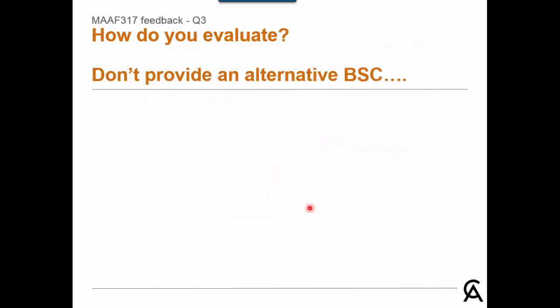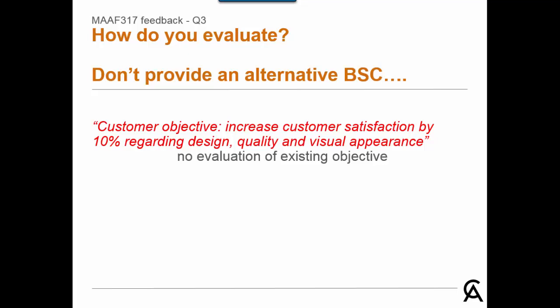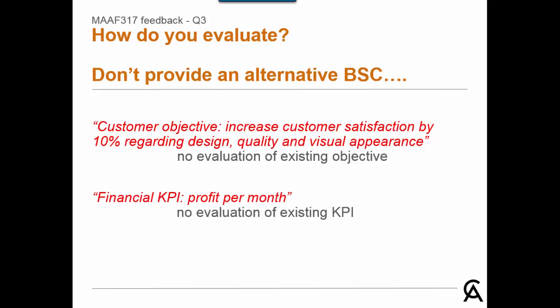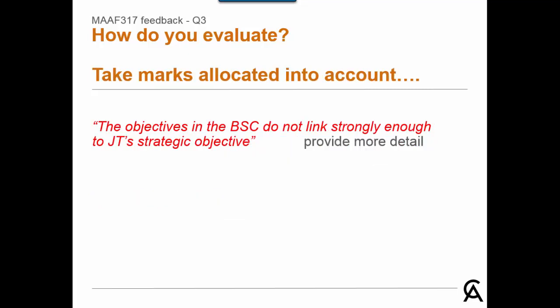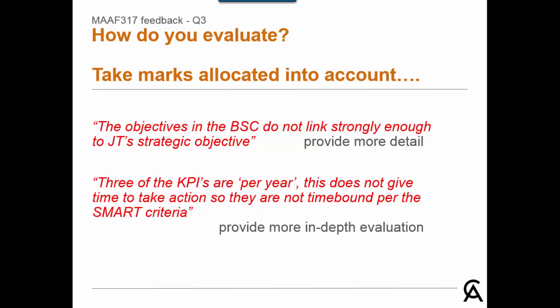Providing an alternative balanced scorecard does not consist of an evaluation. For instance, one answer for the customer objective says to increase customer satisfaction by 10% regarding design, quality and visual appearance — it doesn't evaluate the current customer objective in the question, which is to undertake customer surveys. Similarly, providing a new KPI for the financial perspective does not meet the requirement as it does not evaluate the KPI provided in the question. One comment that the objectives in the balanced scorecard do not link strongly enough to JT's strategic objective is correct, but extra marks would have been awarded if details of how the individual objectives did not link to the various aspects of JT's strategic objective for 2018 were provided. Making just the comment that three KPIs are measured per year and this does not give time to take action so they are not time-bound per the SMART criteria would not be sufficient evaluation of those three KPIs — more in-depth evaluation would have been required.